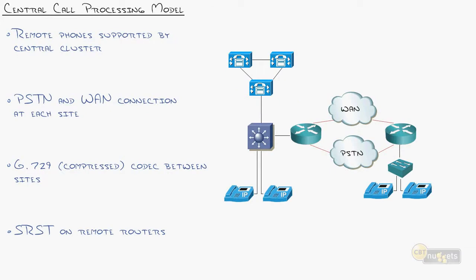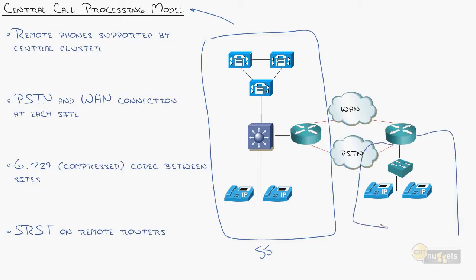As that single site grows, you might decide to move into a centralized call processing model. That means you still have your single site, but then we start getting some remote offices that start fairly small. Maybe you started in Arizona and you expanded to Texas, an office just an executive suite with a couple phones for somebody. Maybe that grew into 20, 30, 40 phones as that remote office grew.